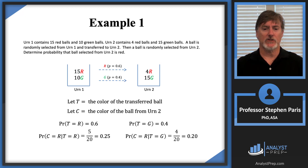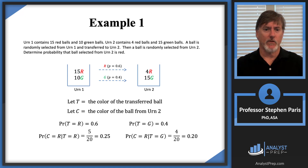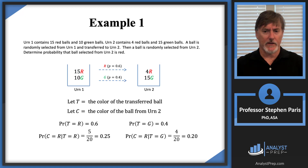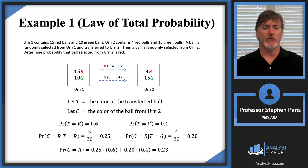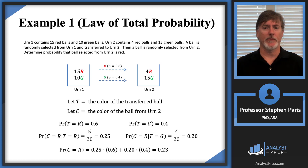The 5 out of 20 and the 4 out of 20 are those decimal values. This is nothing more than a law of total probability problem. We calculate the probability that the ball selected from urn 2 is red by taking 0.25 times 0.6, plus 0.2 times 0.4.